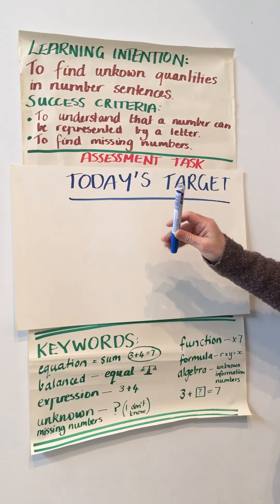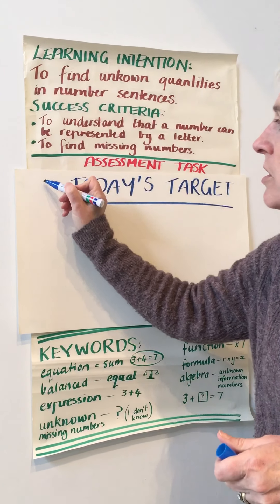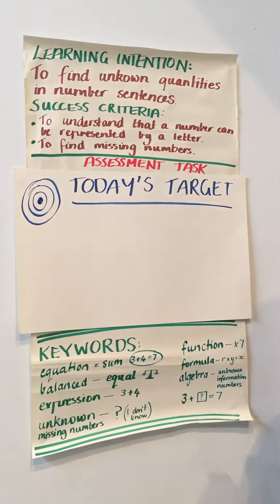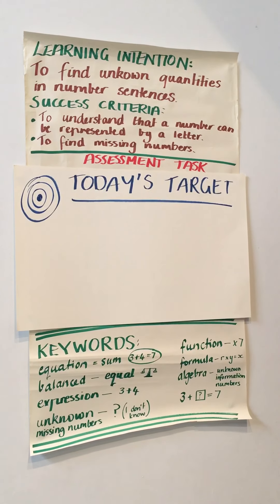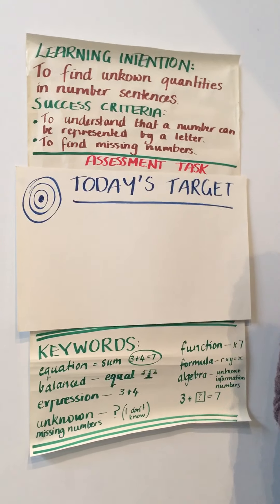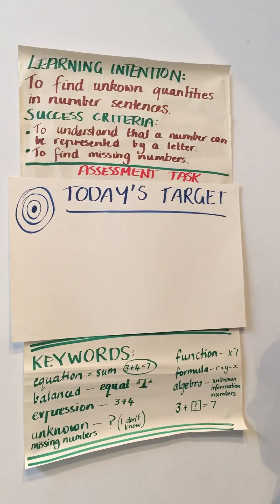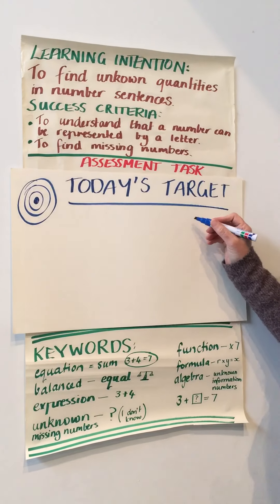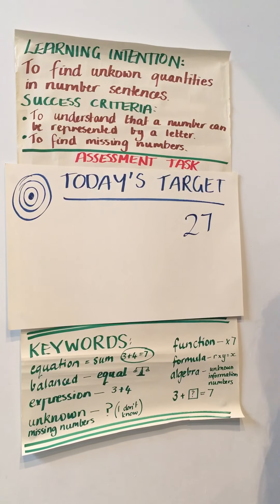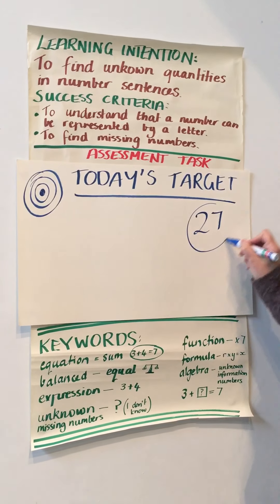Today's task is called today's target. Oh I should have drawn a bullseye over here. So what happens here is you are given a number. Olivia, give me a number between 15 and 30 please. 27. So the lovely Olivia has chosen 27, that is today's target number.